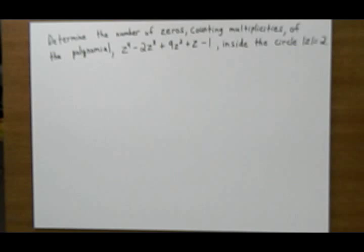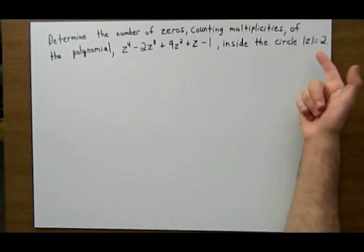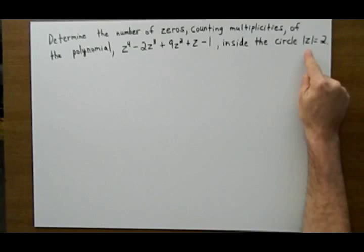we want to determine the number of zeros, counting multiplicities, of the polynomial z to the power of 4 minus 2z cubed plus 9z squared plus z minus 1 lying inside the circle with modulus z equal to 2, that just basically means the circle of radius 2.